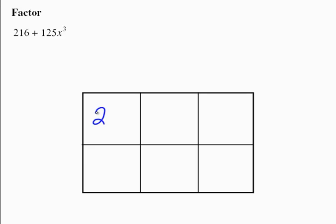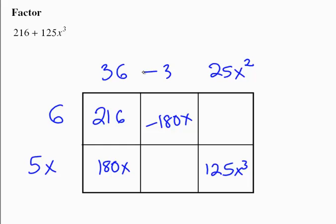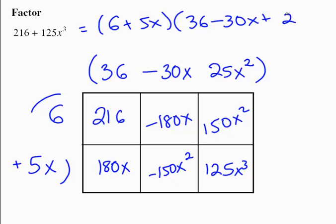This is our last example. We have 216 and 125x cubed. What do we cube to get 216? We cubed 6, and to get 125x cubed, we cubed 5x. So this has to be 36 to give us 216, and this has to be 25x squared. Working backwards: 5 times 36 is 180, which has to cancel with negative 180, so this has to be negative 30x. This has to be negative 150x squared, which means this has to be positive 150x squared. Our factored form is 6 plus 5x times 36 minus 30x plus 25x squared.